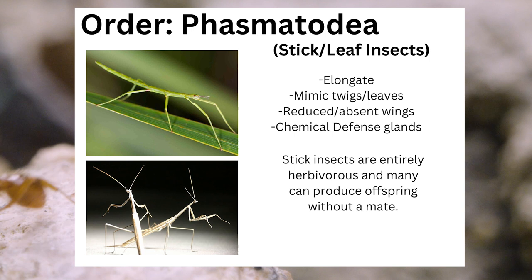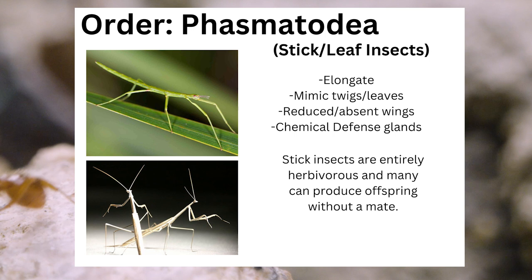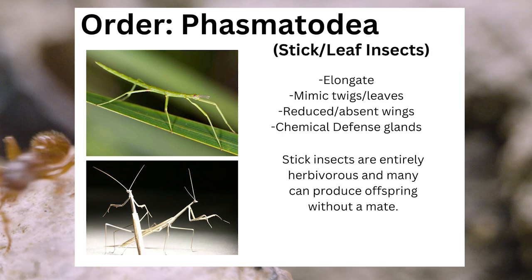Phasmatodea, also known as stick and leaf insects, are elongate, they mimic twigs and leaves, they have reduced or absent wings, and chemical defense glands on their backs. Stick insects are entirely herbivorous, and many can produce offspring without a mate.